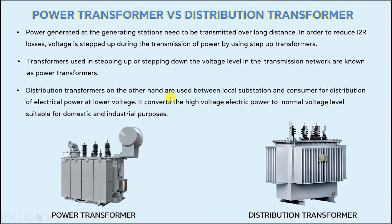Distribution transformers, on the other hand, are used between the local substation and the consumer for distribution of electric power at a lower voltage. They convert the high voltage electric power to a normal voltage suitable for domestic and industrial purposes. This is the basic difference between power transformers and distribution transformers.